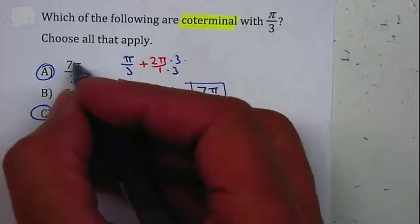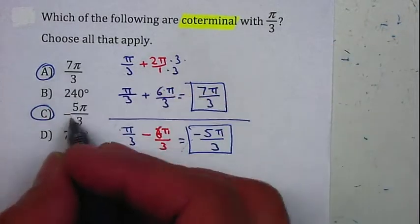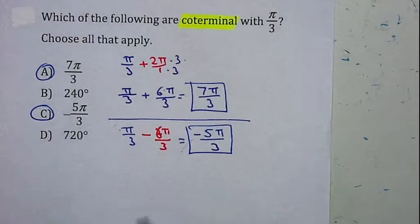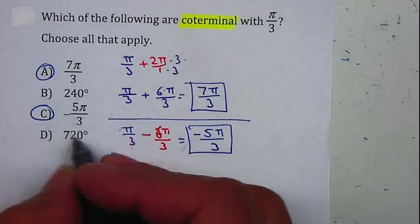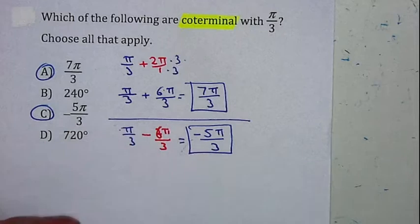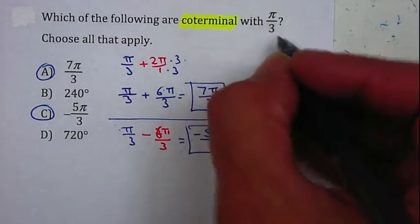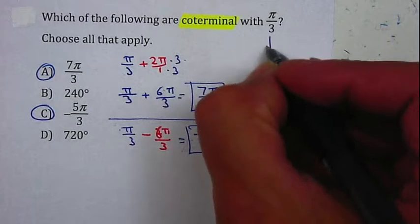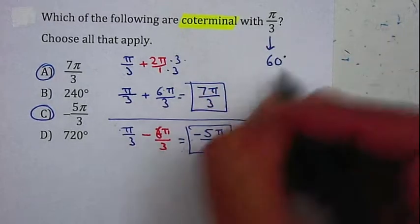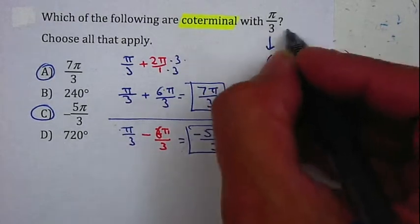π over 3, 7π over 3, and negative 5π over 3 land on the same location. So now let's check and see if either one of those two angles in degrees are also coterminal. Now, remember that π over 3 is equal to 60 degrees.